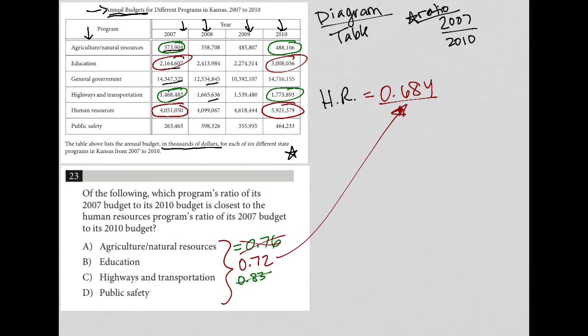And then lastly is the public safety, where I have these two values here. So I'm going to throw that in my calculator. So 263463 divided by 464233. And that is 0.57.